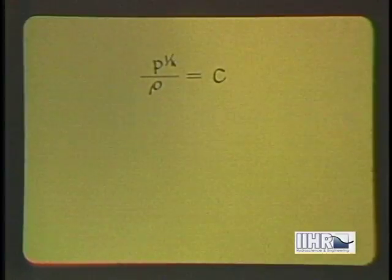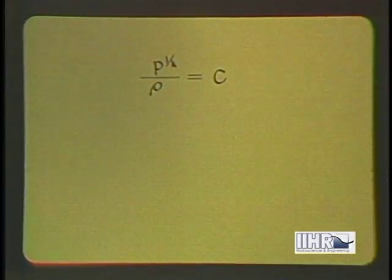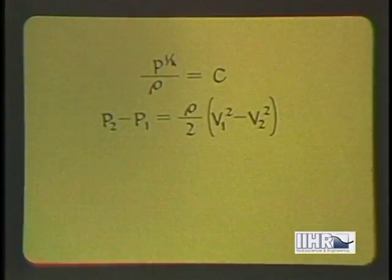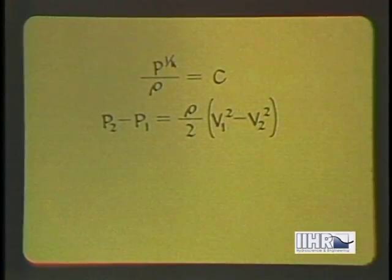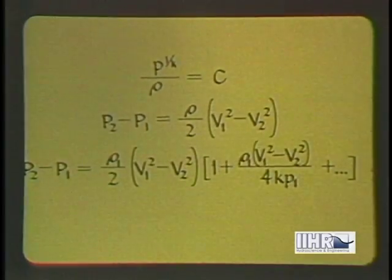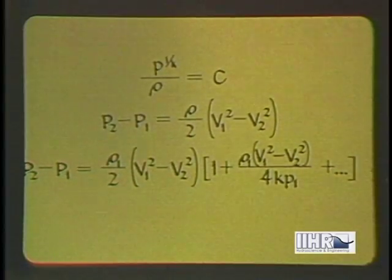If instead of the temperature, it is the heat content that does not change, the pressure density equation involves the adiabatic constant k. If this is combined with the equation of motion for negligible resistance, a result will be obtained which differs from that for an incompressible fluid by an amount depending on the density and the change in velocity between any two sections.